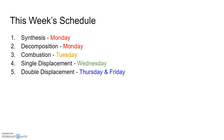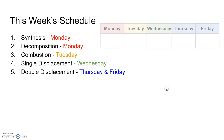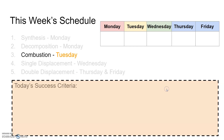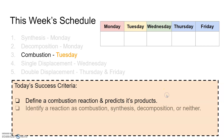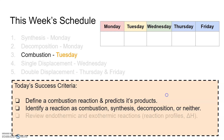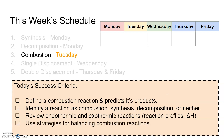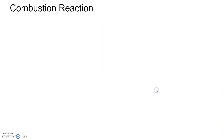On Monday we looked at synthesis and decomposition. Today we're going to focus on combustion. Our success criteria for today are as follows: we're going to define what a combustion reaction is and predict its products. We'll also be able to identify a reaction as combustion, synthesis, decomposition, or neither. We'll review endo and exothermic reactions, including the reaction profiles and the delta H for change in enthalpy. And finally, we're going to use some strategies for balancing combustion reactions. All right, let's get started.